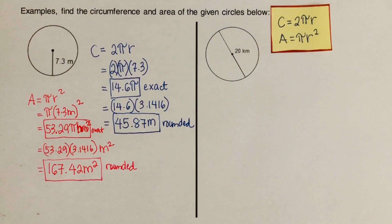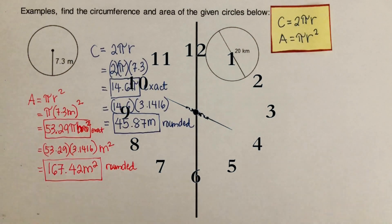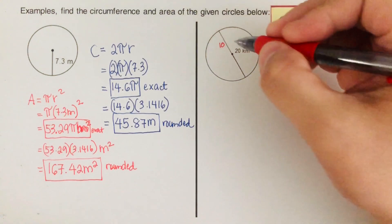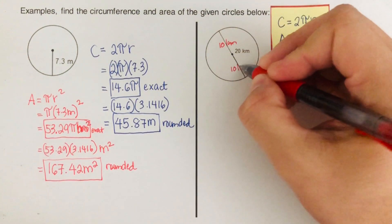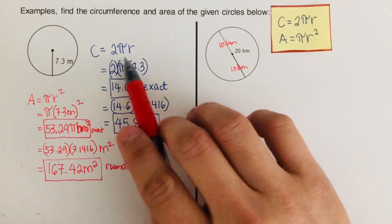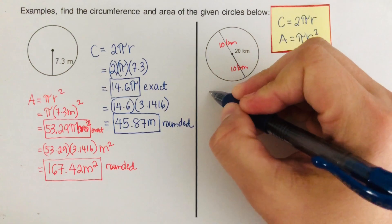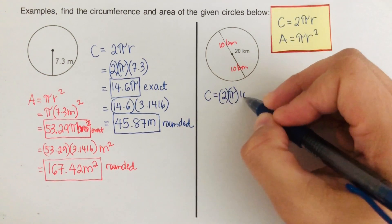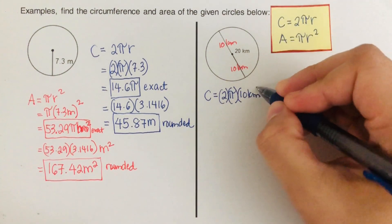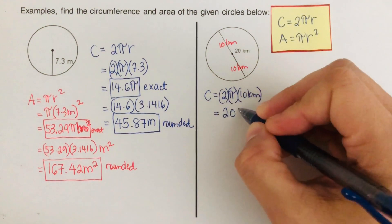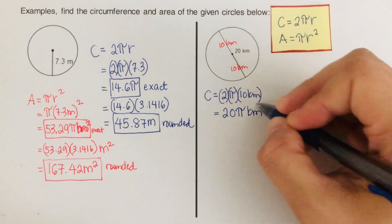Now let's move on to the second problem. I'd encourage you to pause the video and try it on your own first. Okay, so in this problem, the diameter is given as 20 kilometers, meaning each half — from center to side — is 10 kilometers. We solve for circumference first: C = 2πr, so 2 times π times 10 kilometers. The exact value is 20π kilometers.